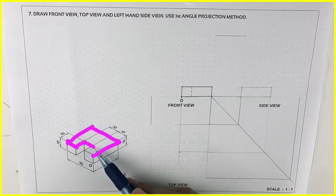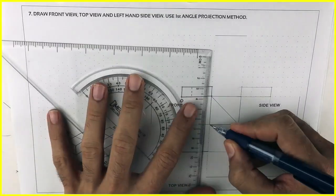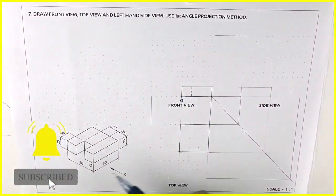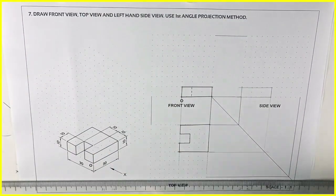You will see this C-shape kind of thing, so we will draw that. It is given 10, 10, and it goes inside by 10. So draw that. We are done with top view.